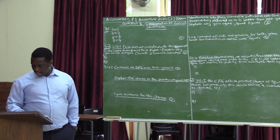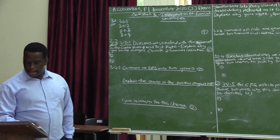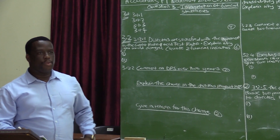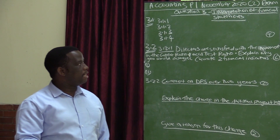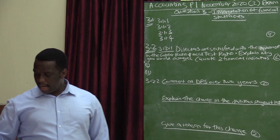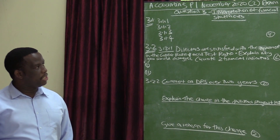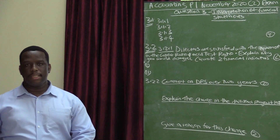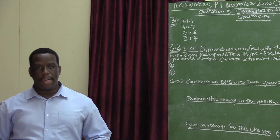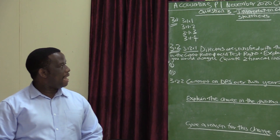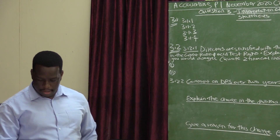The reason I specifically chose question 3 is that observation from past results has shown that most students are not doing well in questions which require interpretation. Question 3 is basically interpretation of financial statements. Unfortunately most students were used to doing accounting calculations only, but accounting has now changed. We now have interpretation of financial statements where one is required to interpret, analyse, and make sure that decisions taken are financially informed and well calculated.